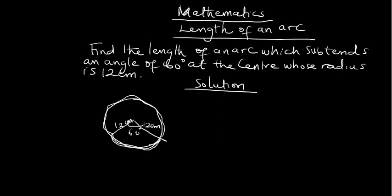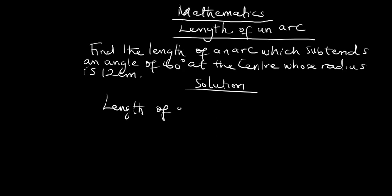The formula for this is: length of an arc is equal to theta over 360 degrees times 2 pi r. But there is something you must note.